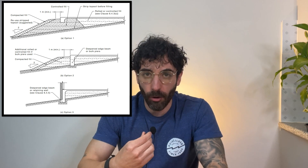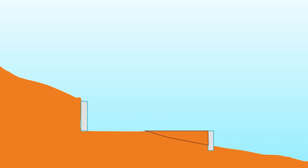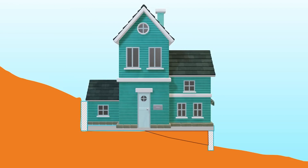Even the edge beams can be sitting on controlled fill as long as it follows clause 6.4.4. Bear in mind that when we say controlled fill, we're talking about compaction that follows the standards. On cut and fill sites, if the site material is unsuitable for use as fill, you will have to introduce piers. Also, the compaction of the fill behind the walls should be done carefully or the wall might be damaged.